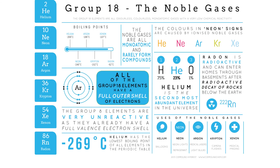Noble gases have a full outer shell of electrons, which is what makes them very unreactive. Helium has the lowest boiling point of any element at negative 269 degrees Celsius, just a little bit above absolute zero. Noble gases are used in neon signs; helium can be used in balloons and also as a cryogen to cool superconducting magnets. Neon is found in signs, argon is used frequently in lasers, krypton was used in camera flashes, and xenon is used for medical imaging.